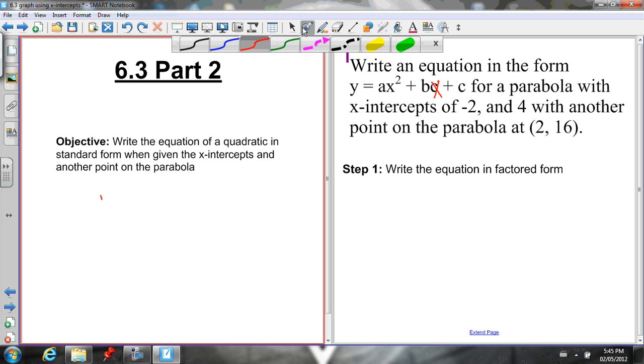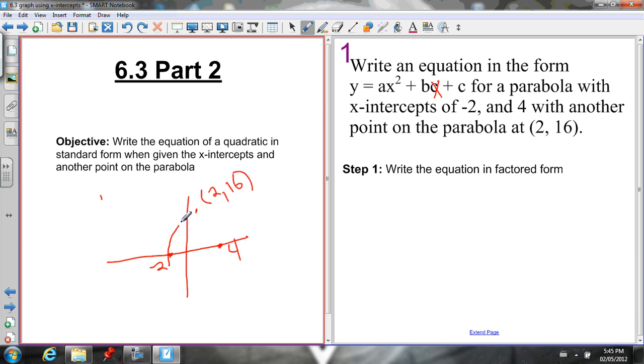So the graph looks roughly like this. Here's our coordinate grid. It's got an x-intercept at negative 2 and 4, and the vertex is somewhere up here at (2, 16). So we could connect these and figure out exactly what the graph looks like. How are we going to write an equation to represent the exact shape of this parabola?